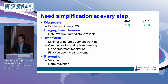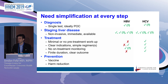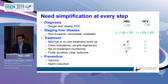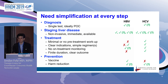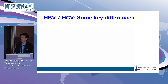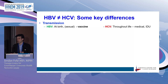Looking at where we are with hepatitis B and C on these criteria: diagnosis is relatively simple but probably still not simple enough. Staging disease — we do have non-invasive tools, but they're either not immediate or, if immediate, not broadly available. Hepatitis B really struggles with treatment: we can't get away with no pre-treatment workup, we don't have clear indications for when to treat, and with current therapies we don't have finite duration or clear outcomes. For hepatitis C, a vaccine is still missing, and harm reduction, though increasingly used, is not broadly enough implemented worldwide.